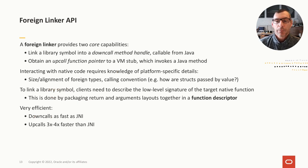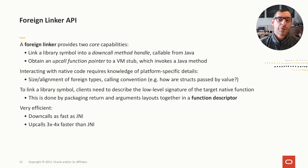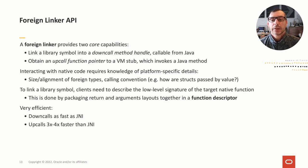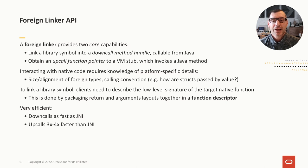The Foreign Linker API is the second building block of Panama's interop support. It provides two basic capabilities. First, it allows method handles to target foreign functions — these downcall method handles can be created and called using only Java code. Second, the Foreign Linker API can turn a Java method into a function pointer that can be passed to a native function, which is very useful for implementing callbacks. Interacting with a native function depends on low-level platform-dependent details such as the size and alignment of function arguments and return values.